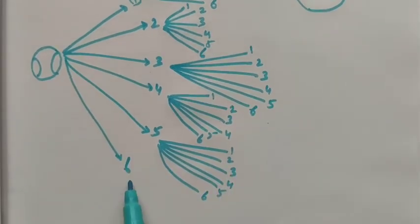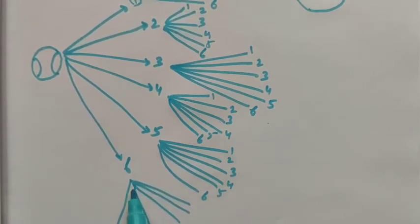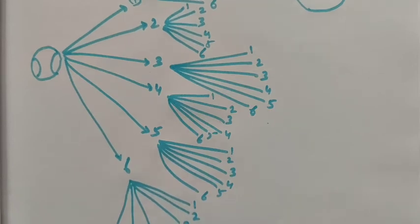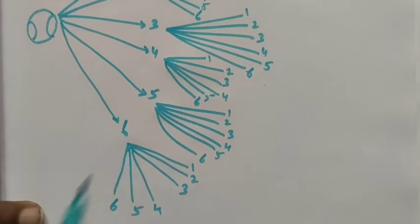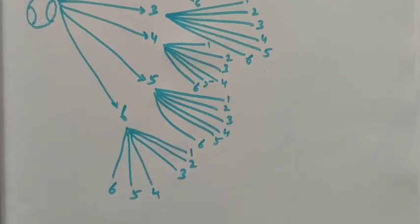If the first ball I pick up is number 6, then the second ball has the possible outcomes 1, 2, 3, 4, 5, 6. These are all our possible outcomes.